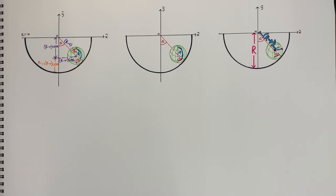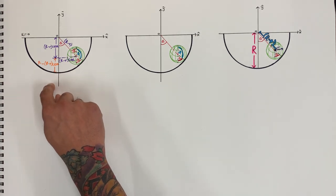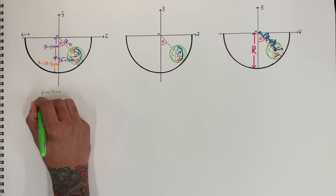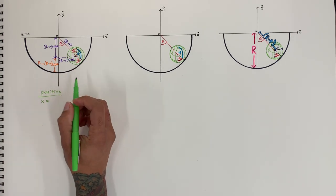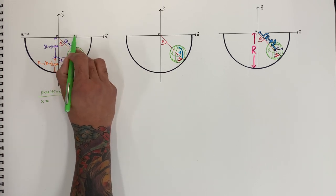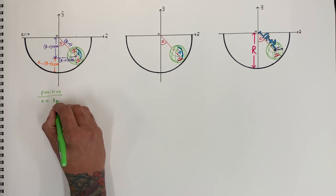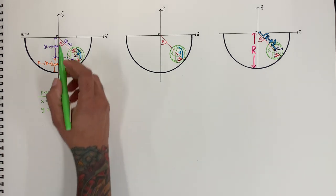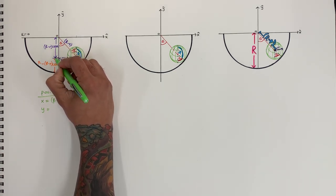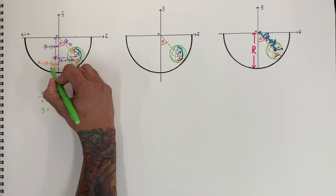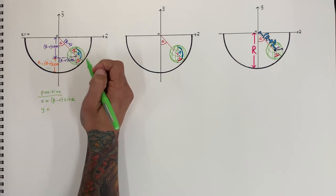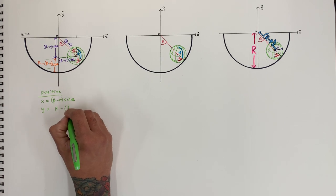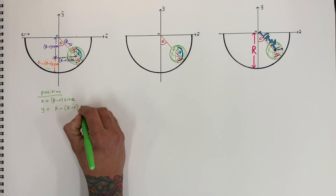So the position coordinates: x is equal to big R minus little r times sine theta in the x direction. In the y direction, we have big R minus (big R minus little r cosine theta), which gives us the y position of the center of the sphere.